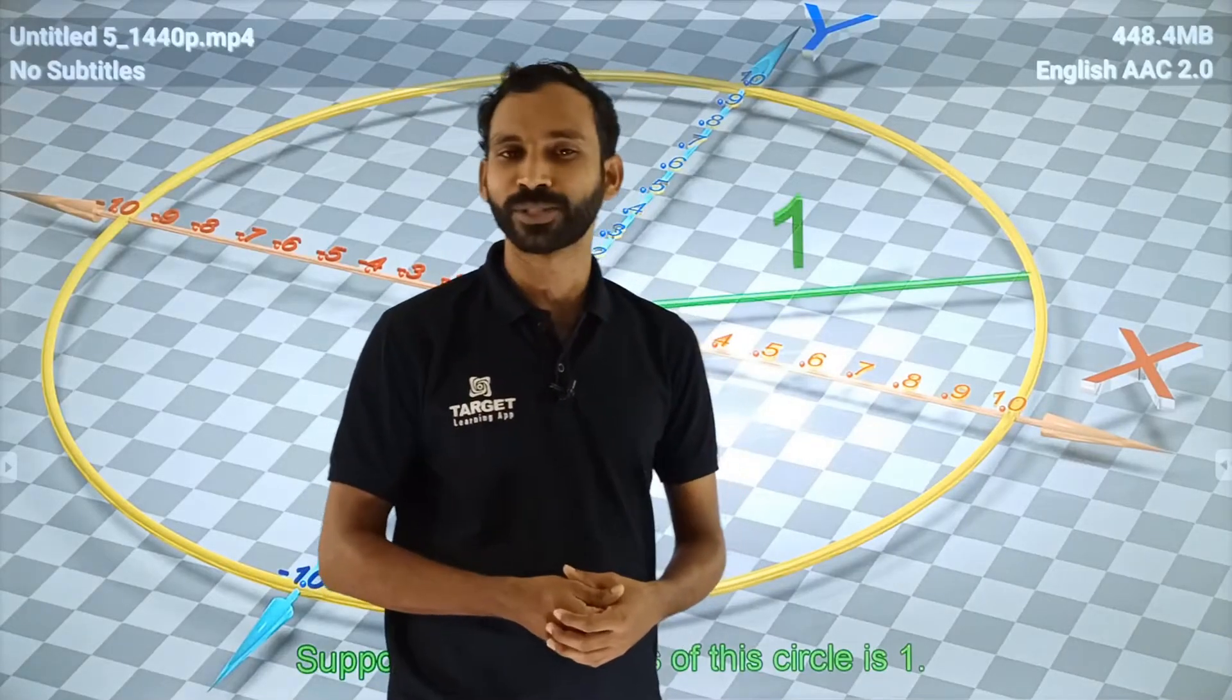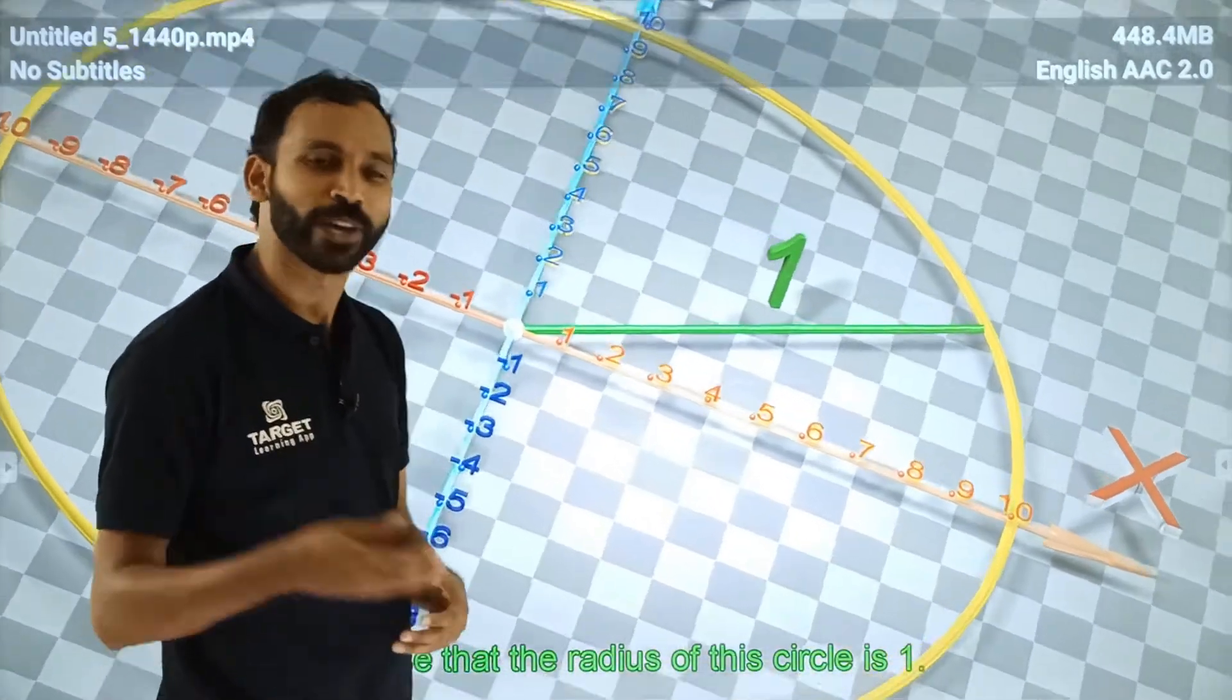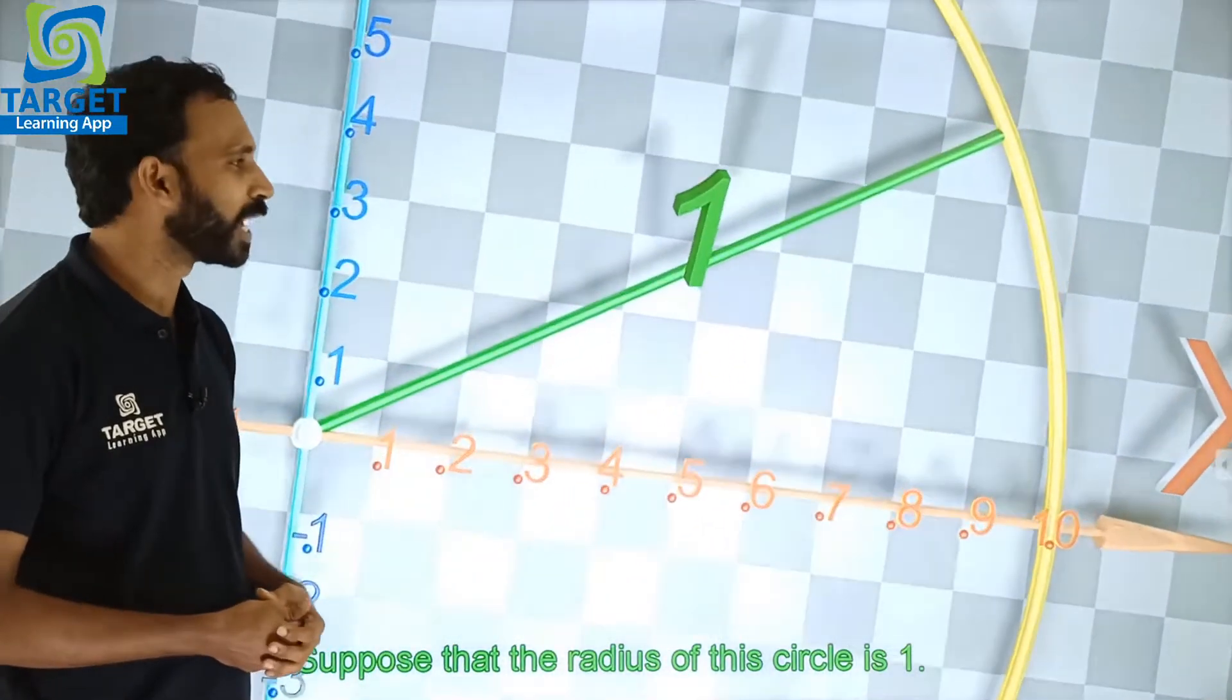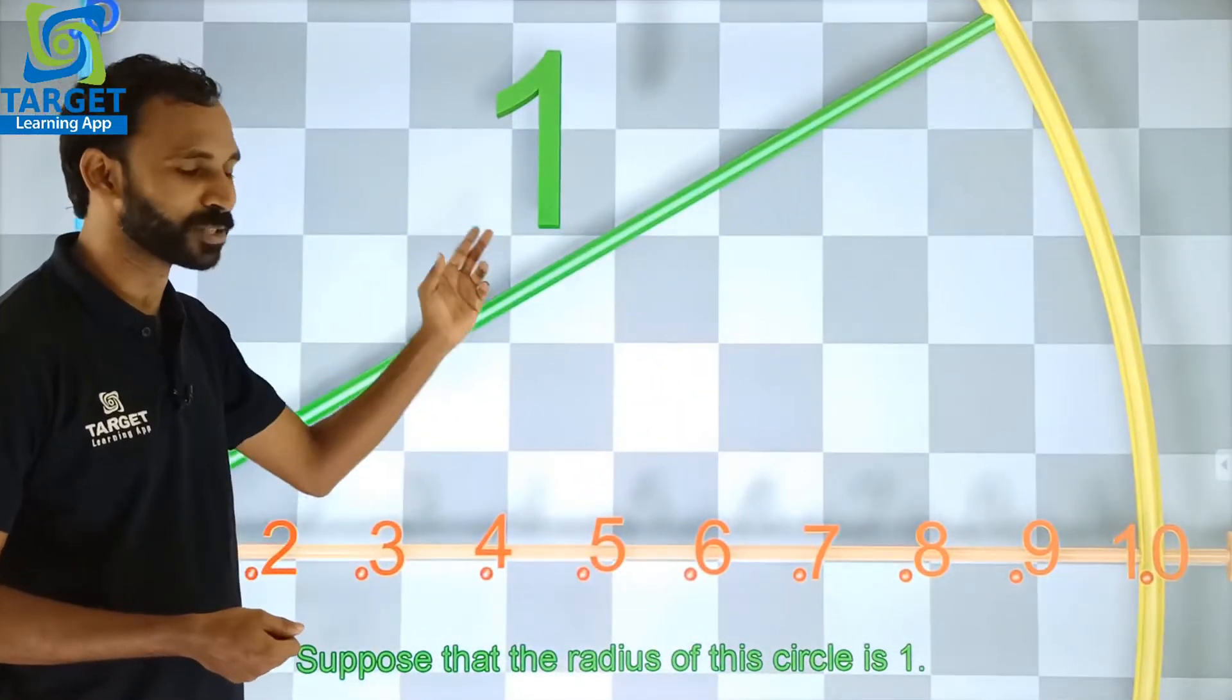Dear students, let us talk about trigonometry with the help of a unit circle. We know that a unit circle is nothing but a circle with radius 1 unit.